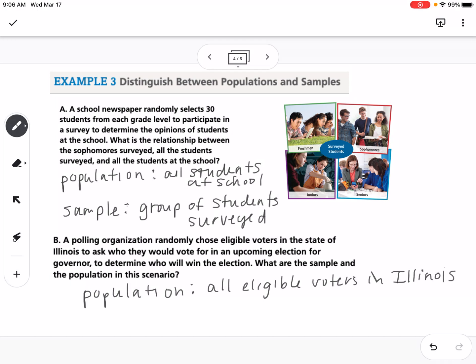It's not the whole population of Illinois because they're trying to determine who is going to end up governor. So it would be all eligible voters in Illinois. Our sample would be the people that were surveyed.